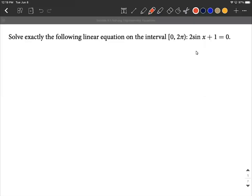Okay, let's solve a trigonometric equation. We're looking for all solutions on the interval from 0 to 2π, basically the first time around the circle. We have the equation 2sin(x) + 1 = 0.